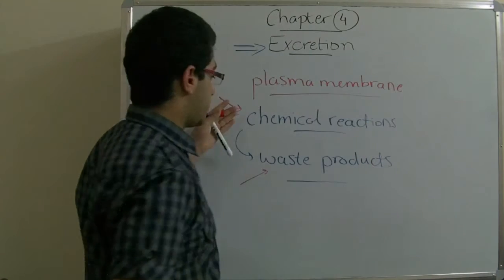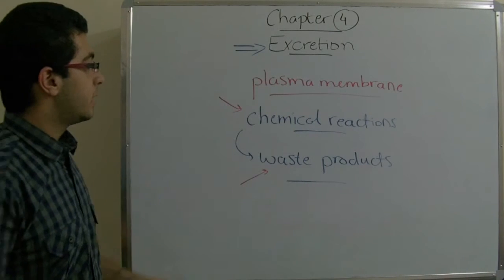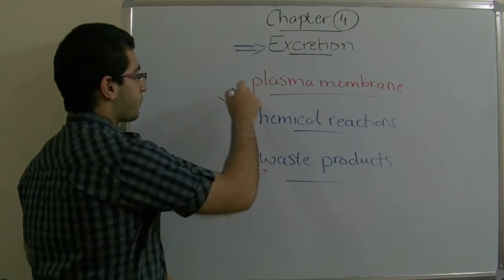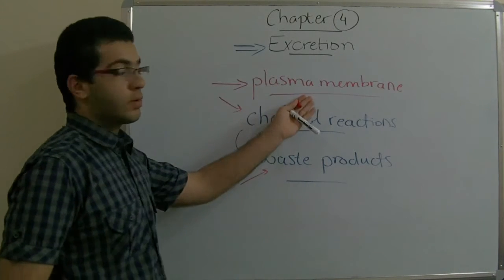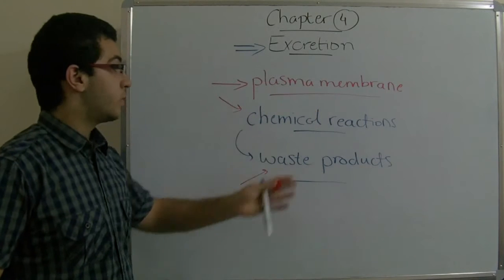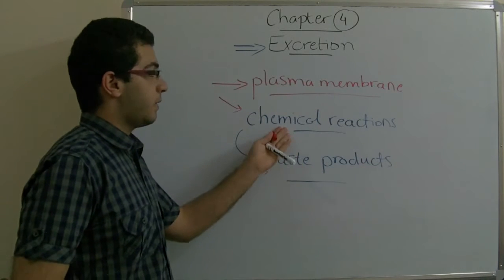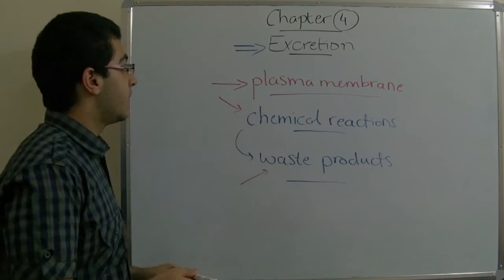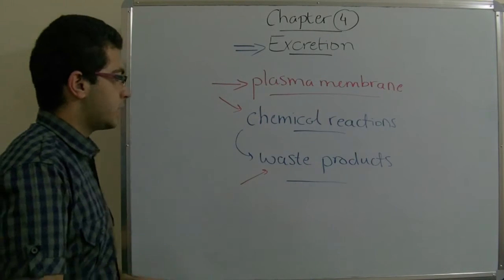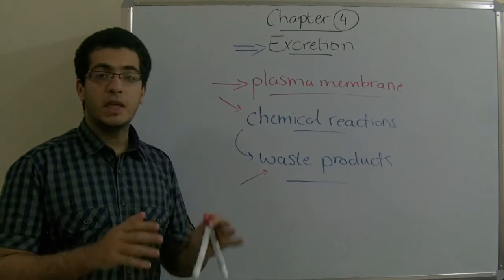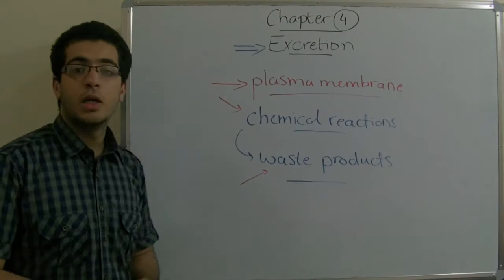Any other substance which leaves the body without passing through a plasma membrane, or in other words, without being a waste product from a chemical reaction inside a human cell or any other organism's cell, is not considered an excretion.